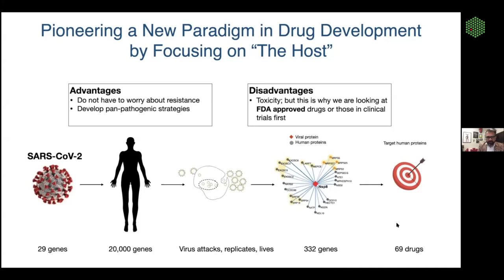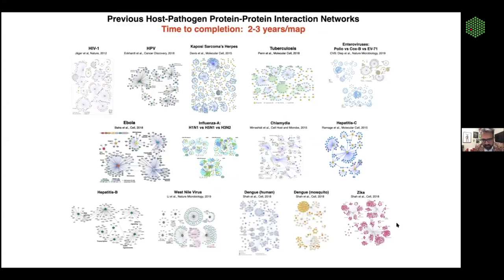This type of protein-protein interaction mapping, looking at different viruses, we've done over the last dozen years, including HIV, different enteroviruses, influenza, and Ebola. Normally generating one of these maps takes at least a year, but we generated this particular map in a matter of weeks. To me, that was a testament to the collaborative spirit that went into the QCRG program, especially before the shutdown was put in place at UCSF in the middle of March.